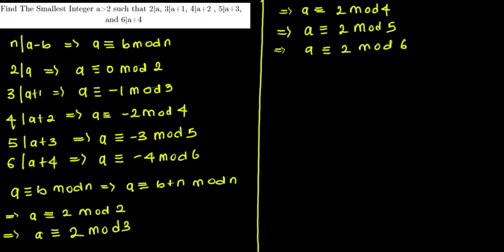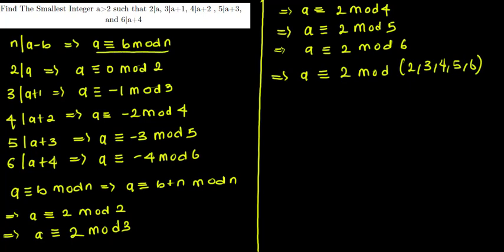So what this means is that a is congruent to 2 modulo each of 2, 3, 4, 5, and 6. Since a ≡ b (mod n) means n divides a minus b, all of 2, 3, 4, 5, and 6 divide a minus 2.